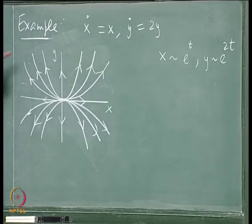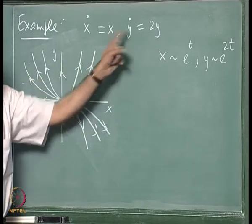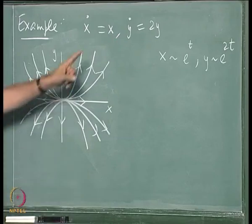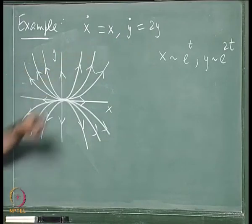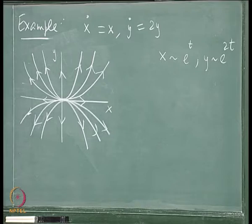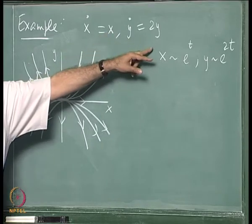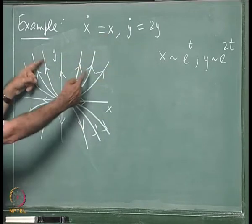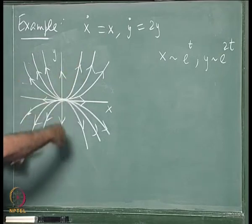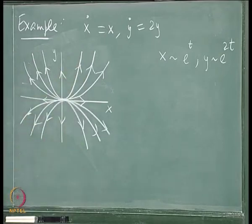It is just a different set of eigenvalues. If I changed y-dot to 3y or any other multiple, the shapes of the parabolas would be slightly different. Had the coefficient of x been larger than the coefficient of y, the parabolas would flow out with the y-axis as the common tangent. But it remains an unstable node.